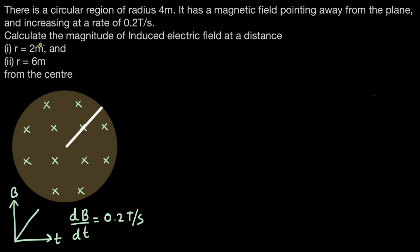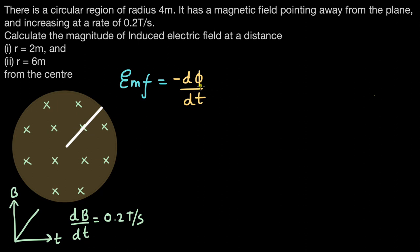First, let's focus on the magnitude of induced electric field at a distance of 2 meters from the center and keep 6 meters for later. Since the magnetic field strength is changing, the magnetic flux must also change. From Faraday's law, EMF equals the rate of change of magnetic flux, which is equal to minus dΦ/dt. But there is a problem — we do not see any circuit or coil. So how do we go from EMF = -dΦ/dt to the magnitude of induced electric field?